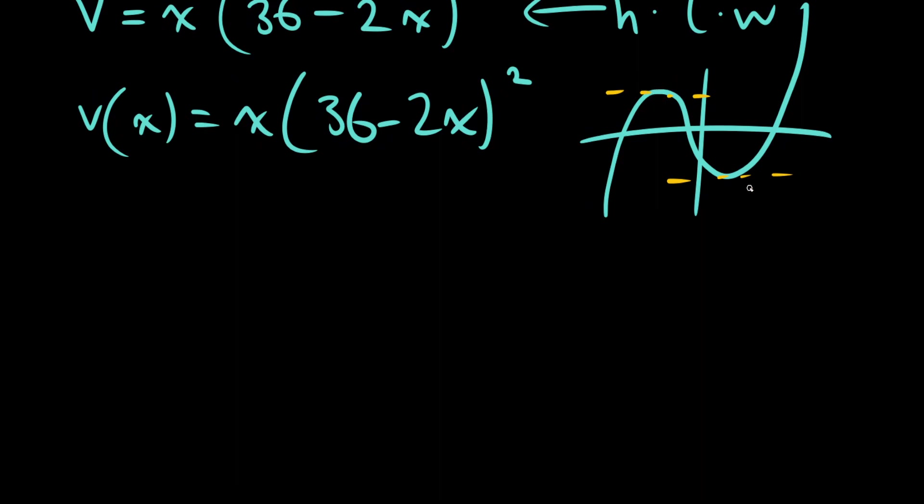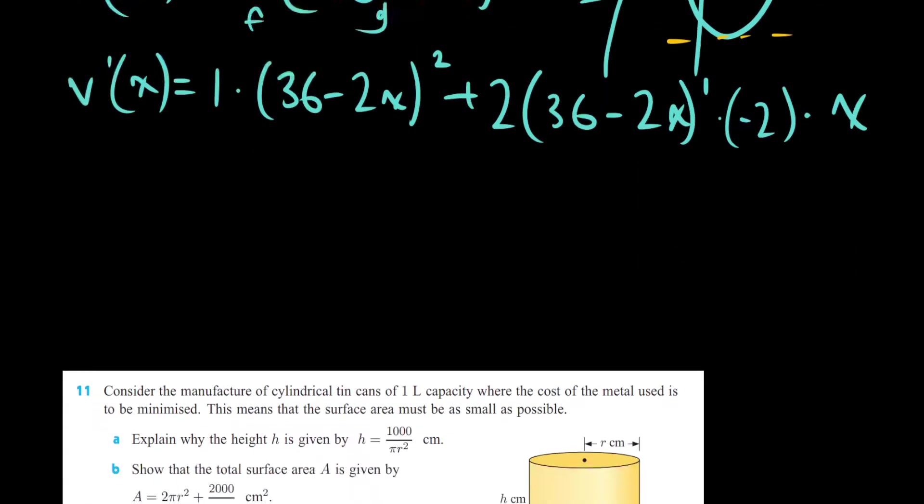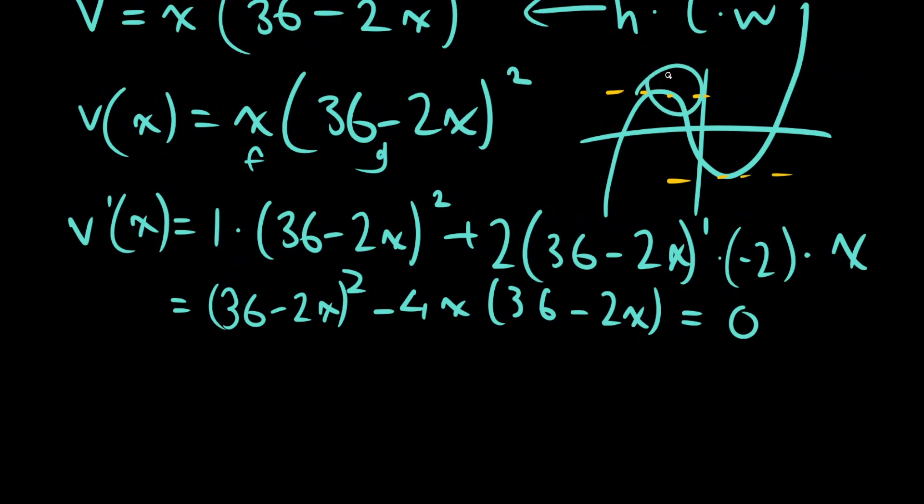So what we're going to do first is find the derivative function. So v prime of x, we're going to be using the product rule. 1 times 36 minus 2x squared plus, we're going to use the chain rule, so this is 2 times 36 minus 2x to the 1 multiplied by the derivative of the inside, which is going to be minus 2 multiplied by x. We're going to let this equal zero so we can find any of our zero slopes.